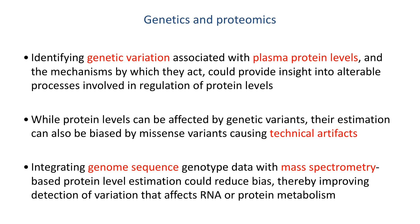Therefore, by integrating mass spectrometry peptide and protein level estimation with exome sequencing, it could be possible to identify true PQTLs and exclude those associated with artifactual associations, thereby improving the identification of variants associated with protein levels.